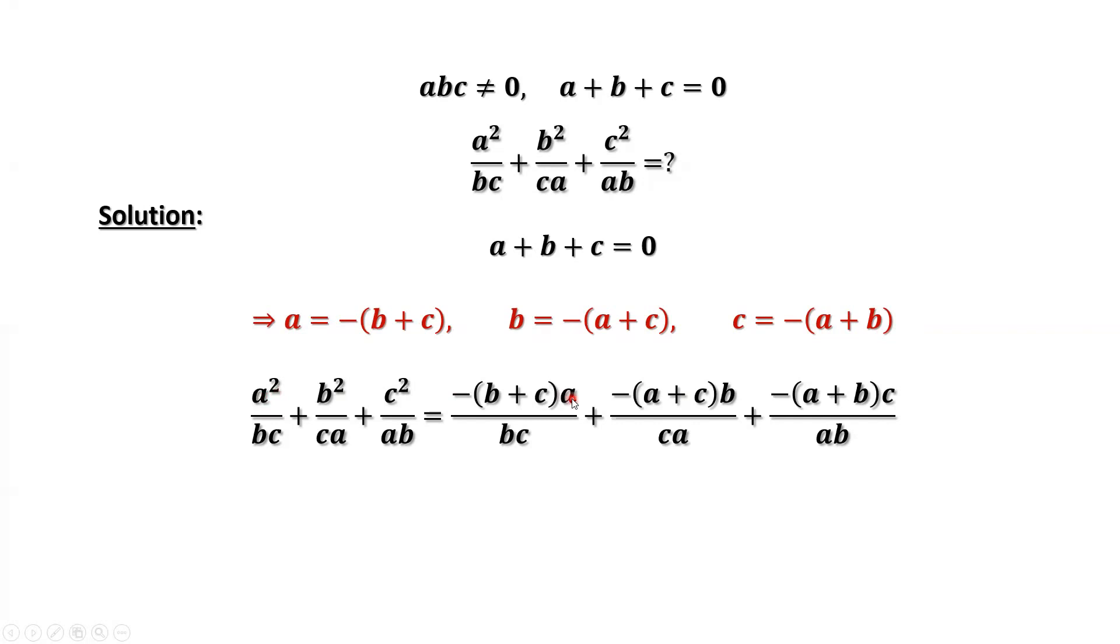If we plug in A here, this square, you will have a crossing term and A squared term and B squared term and C squared term. It will be more complicated.